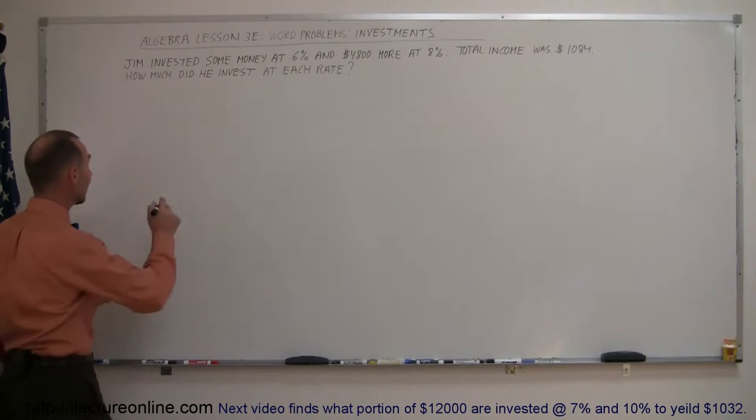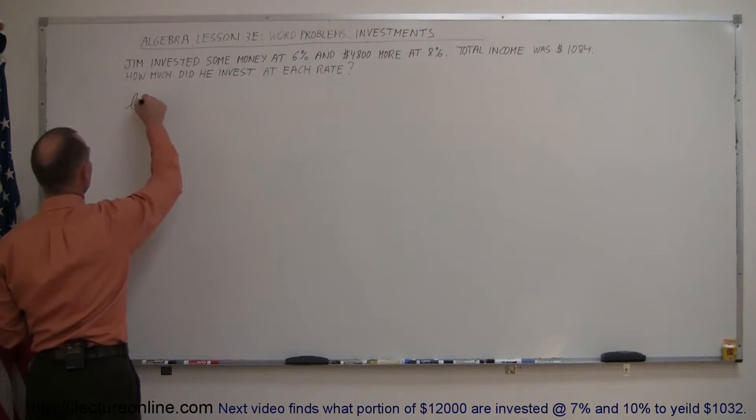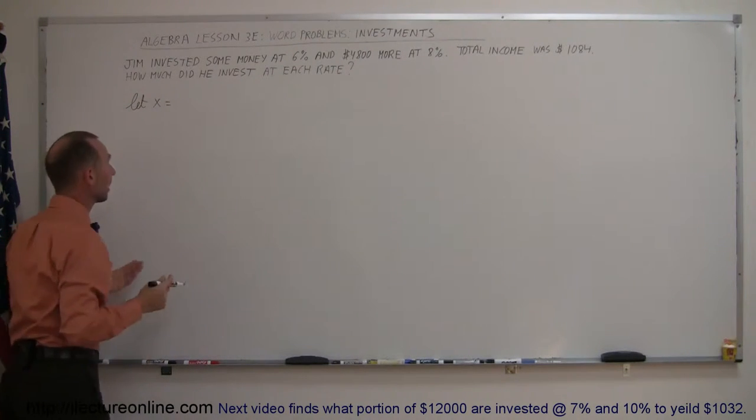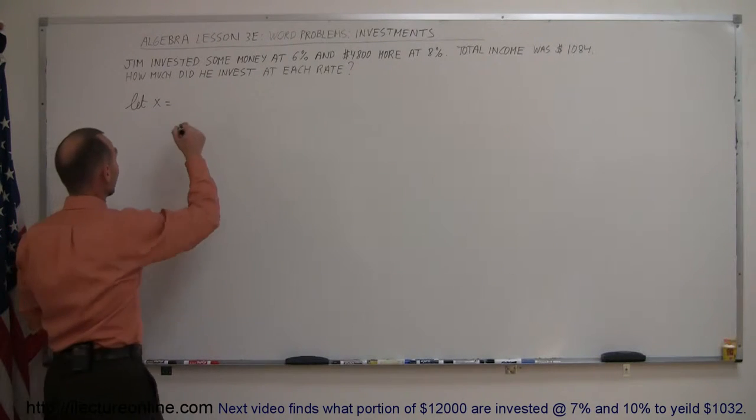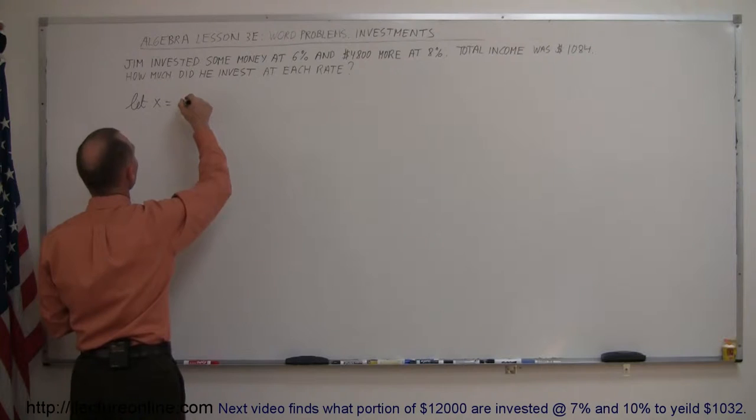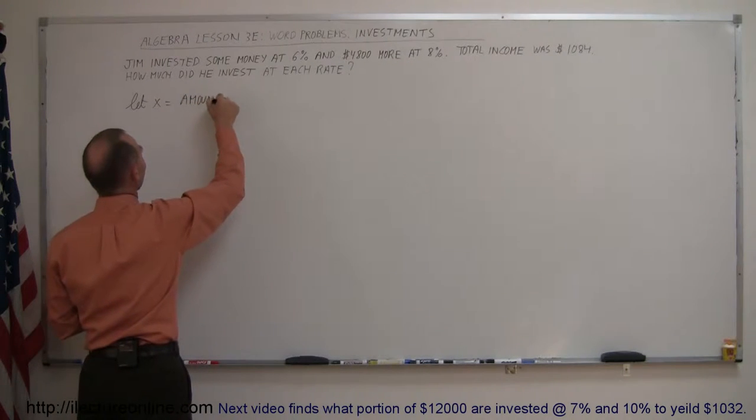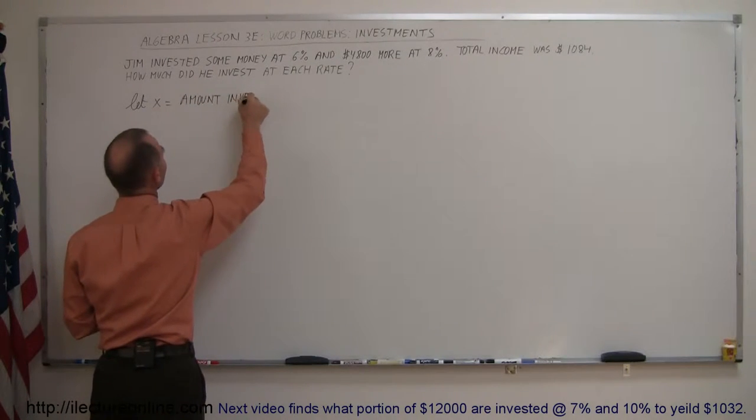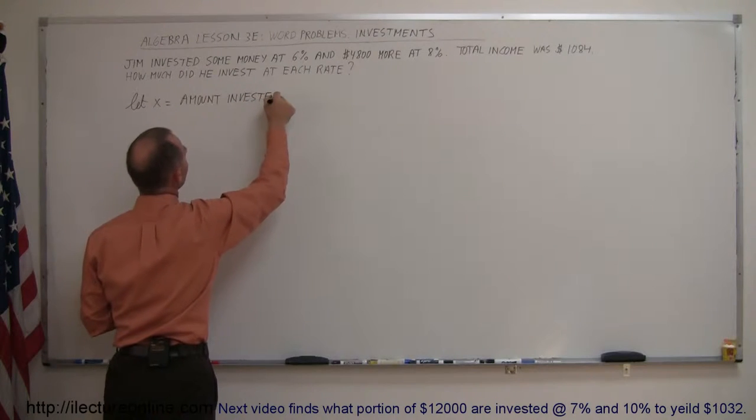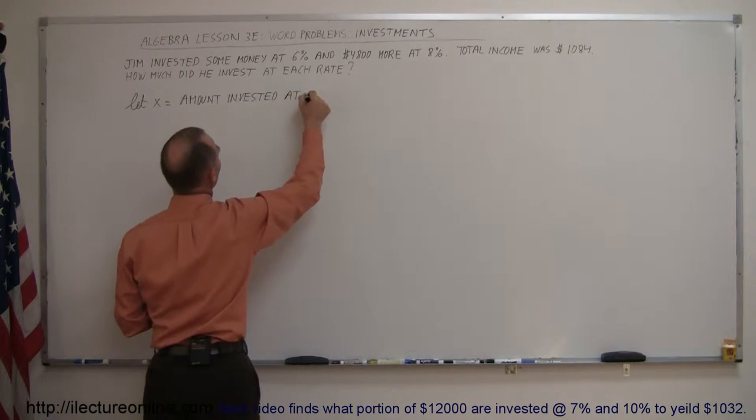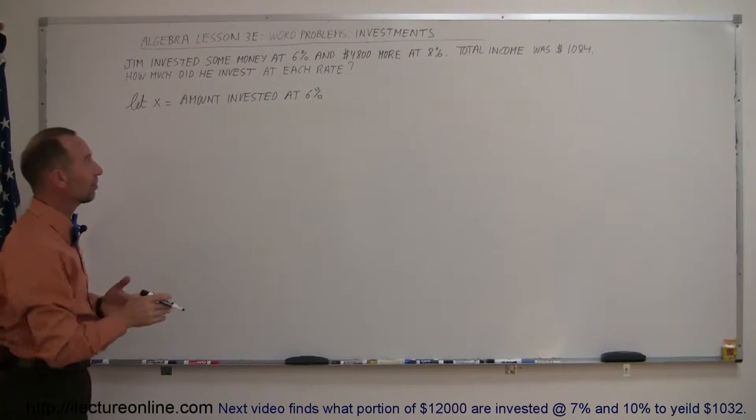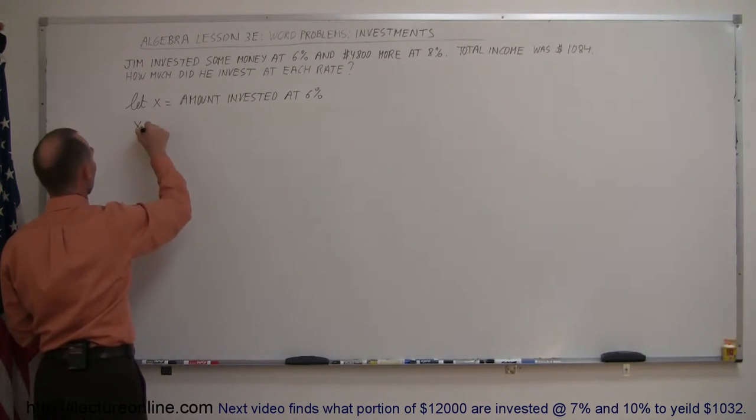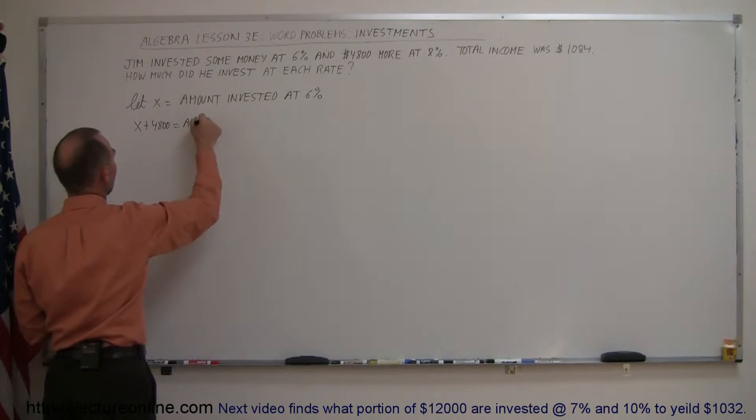So again we're going to start out by saying let x equal, and in this case we're going to let x equal the amount that he invested at 6% because that's not known. So let's let x equal the amount invested at 6%, and then you can see that $4,800 more was invested at 8%, so we can then say that x plus $4,800 was the amount invested at 8%.